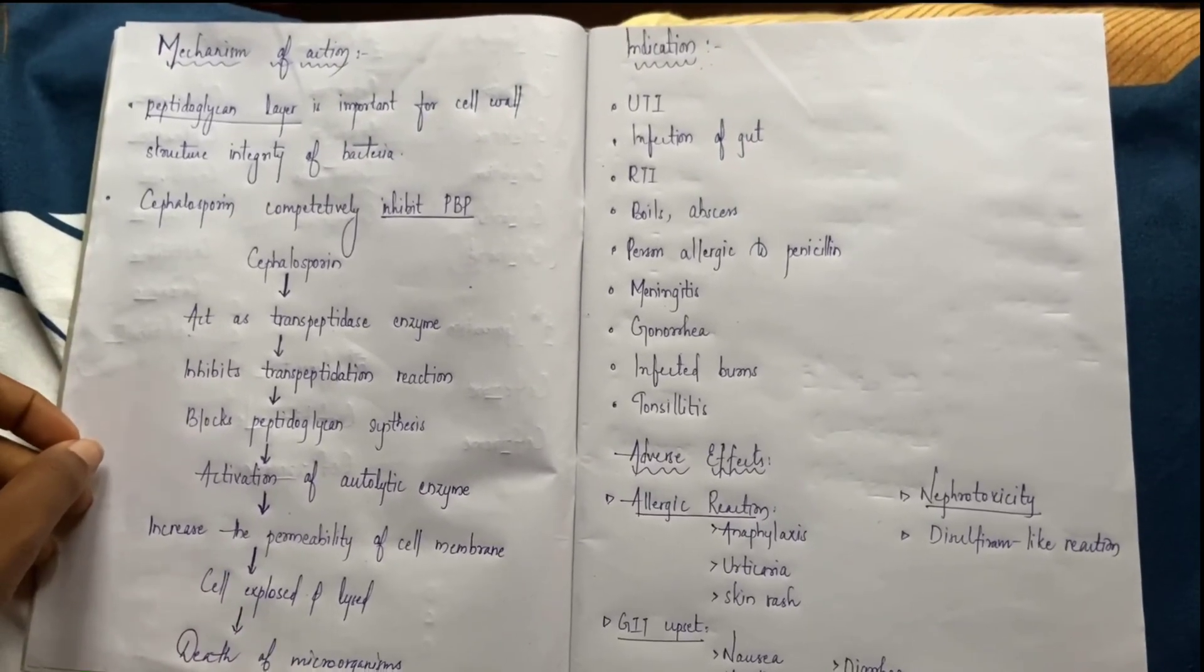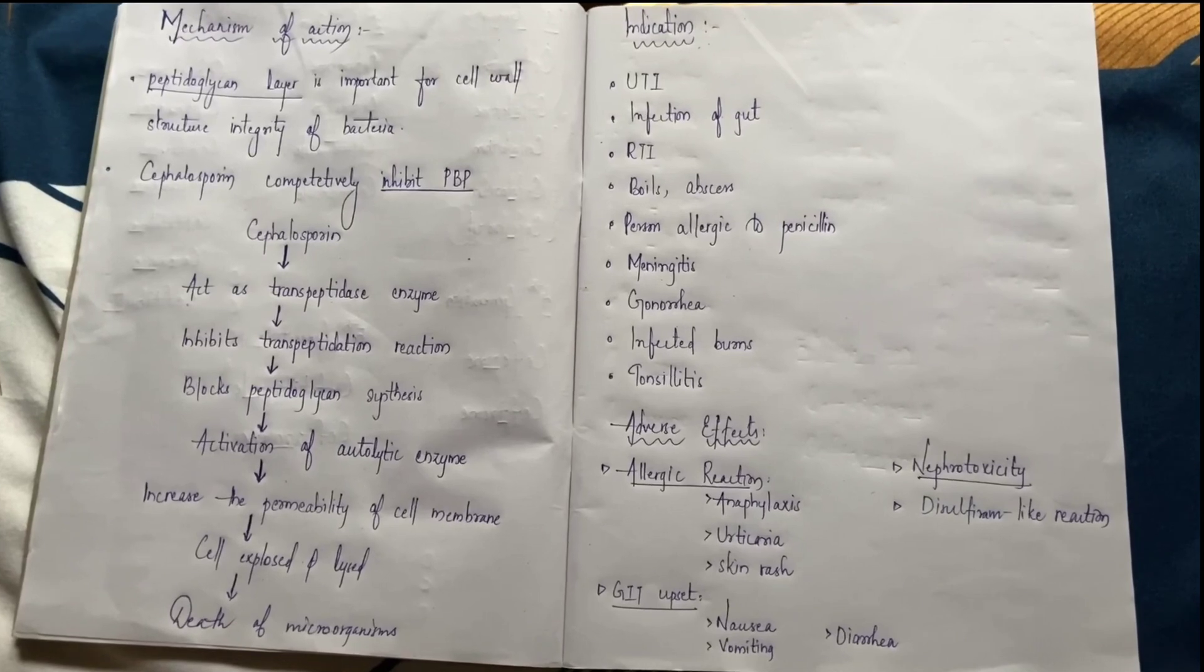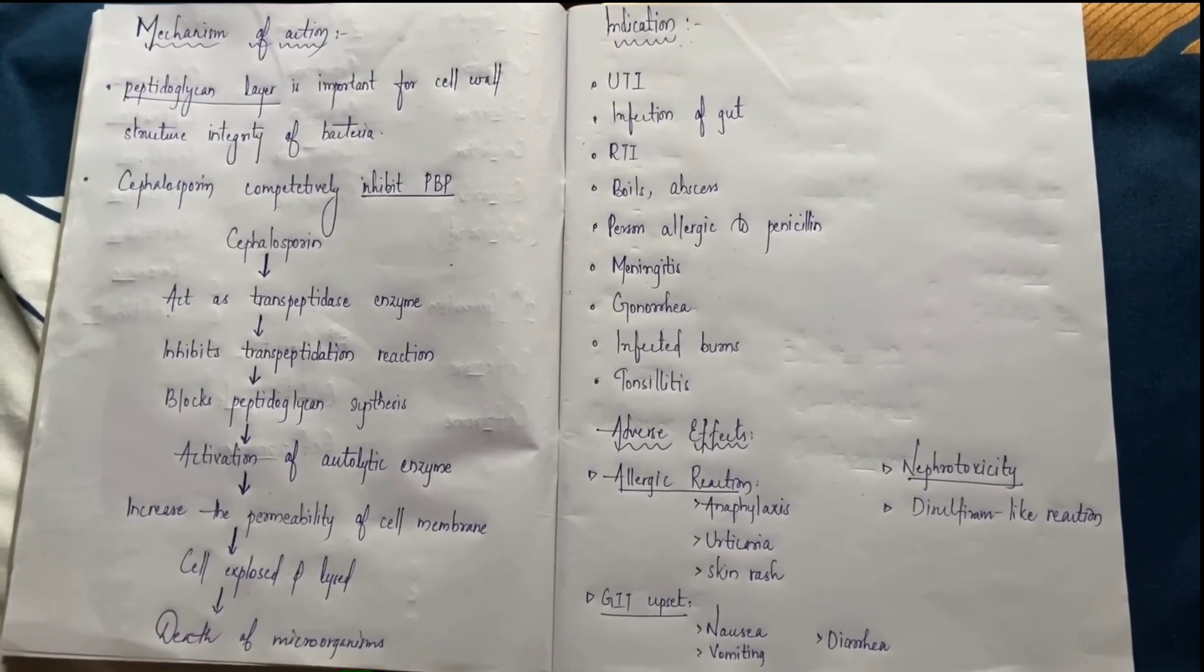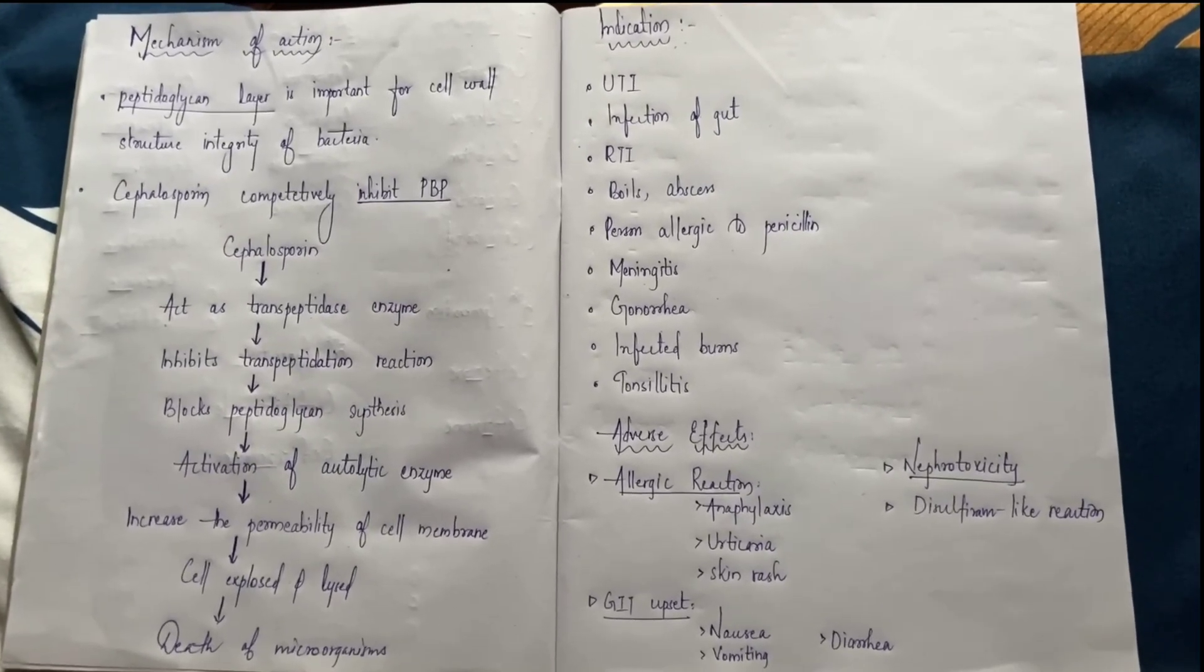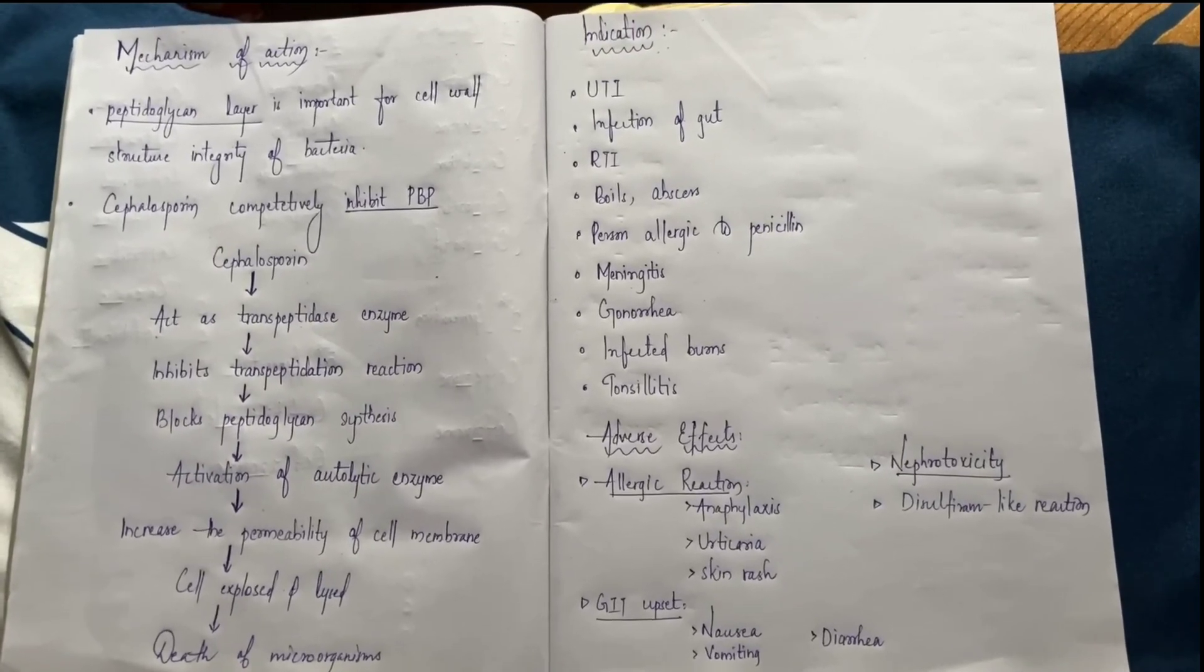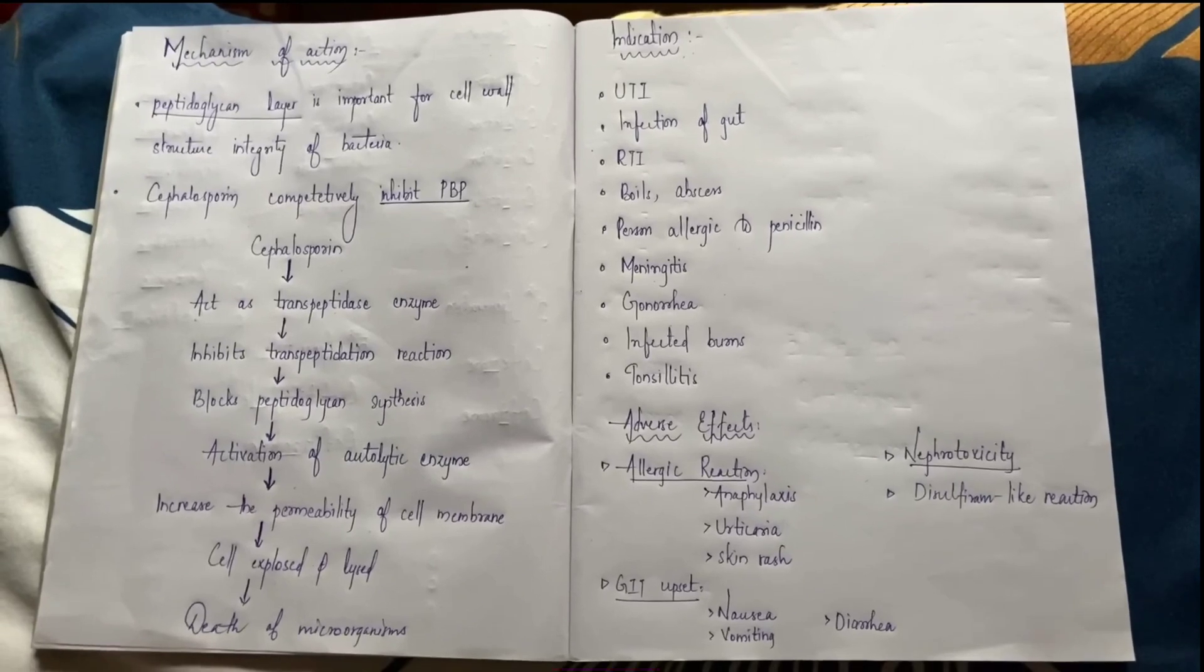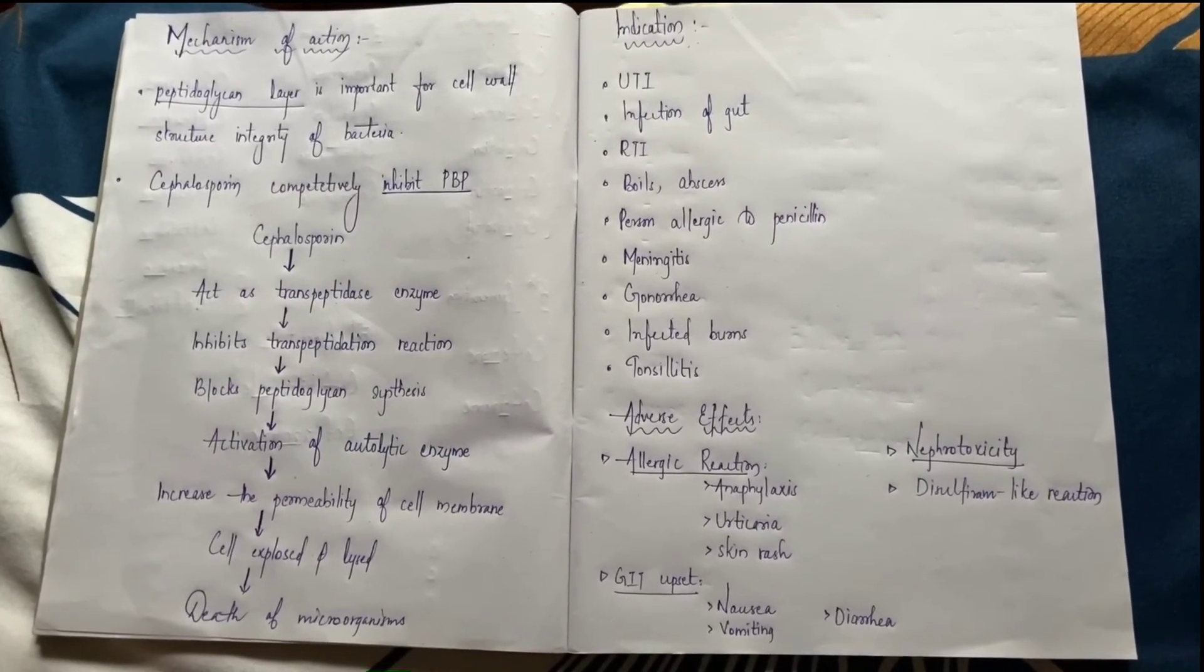What are the indications? UTI - urinary tract infection. We give Cephalosporins for infection of the gut, RTI - respiratory tract infection, boils or abscesses. We give Cephalosporins for persons allergic to penicillin. Also for meningitis, gonorrhea, infected burns, and tonsillitis. These are all the indications.